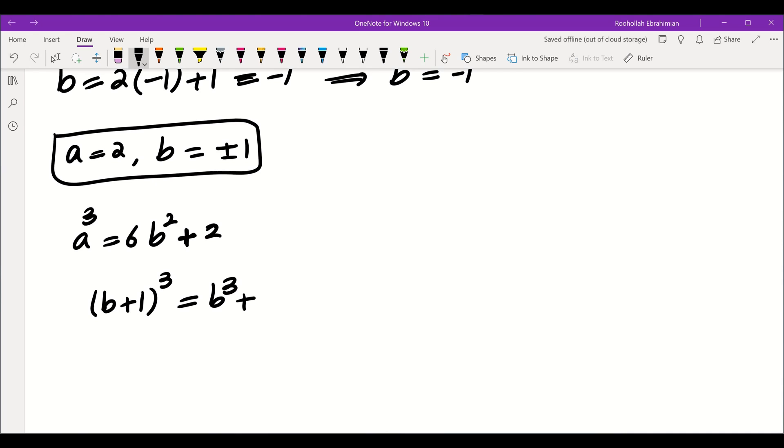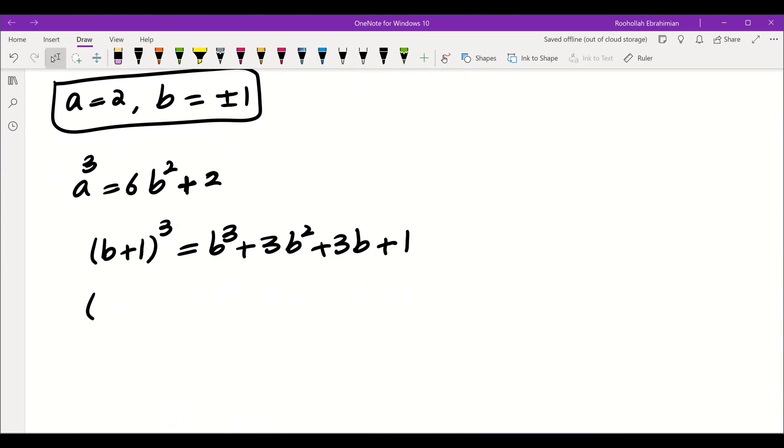If you look at b plus 1 cubed, that is b cubed plus 3b squared plus 3b plus 1. If you look at 1 minus b cubed, that is 1 minus 3b plus 3b squared and then minus b cubed. If you add these two, you get exactly 2.